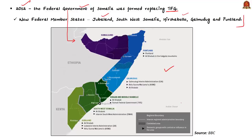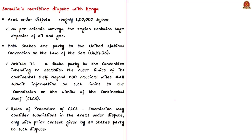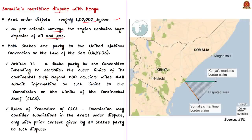Now we'll discuss two crucial matters of Somalia mentioned in this editorial. The first is Somalia's maritime dispute with Kenya. The area under dispute is roughly around one lakh square kilometers and is said to contain huge deposits of oil and gas based on seismic surveys. Both countries are party to the United Nations Convention on the Law of the Sea (UNCLOS). As per Article 76 of UNCLOS, a state party intending to establish the outer limits of its continental shelf beyond 200 nautical miles shall submit information to the Commission on the Limits of the Continental Shelf (CLCS).